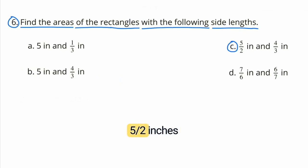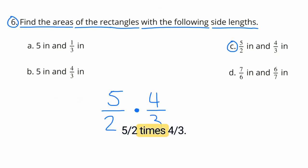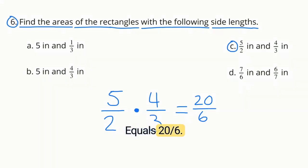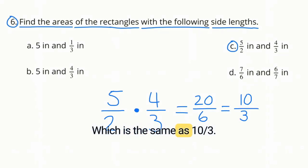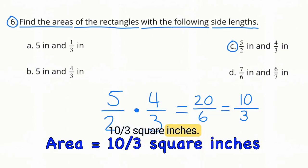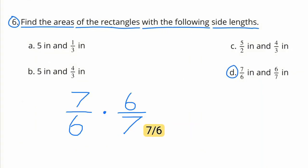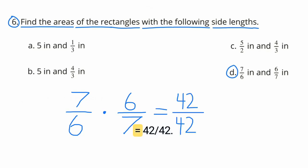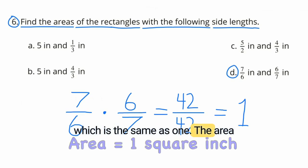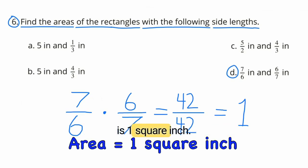C: 5 halves inches and 4 thirds inches — 5 over 2 times 4 thirds equals 20 sixths, which is the same as 10 thirds. D: 7 sixths inches and 6 sevenths inches — 7 sixths times 6 sevenths equals 42 over 42, which is the same as 1. The area is 1 square inch.